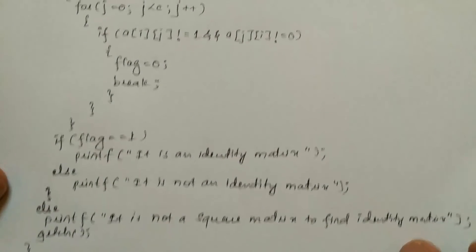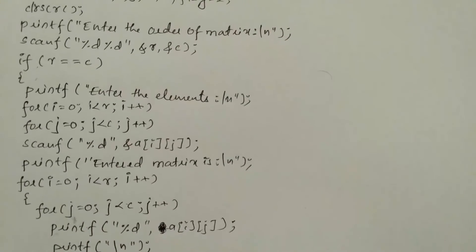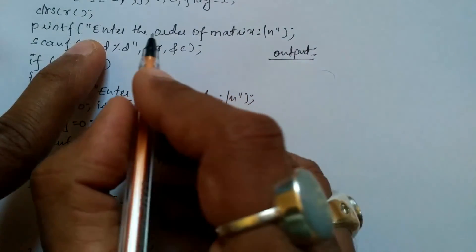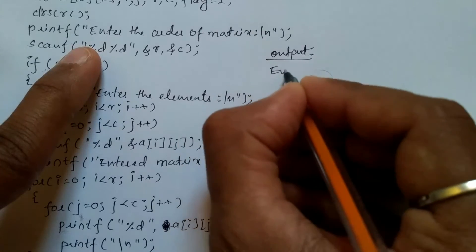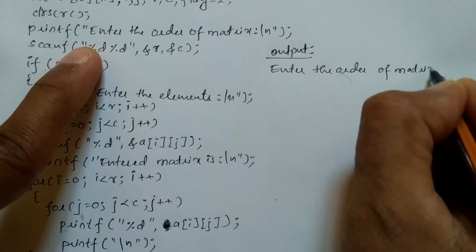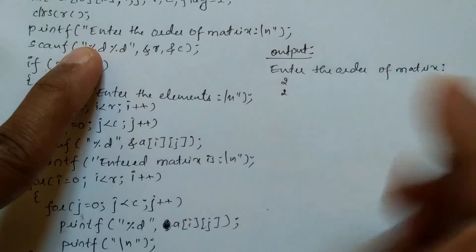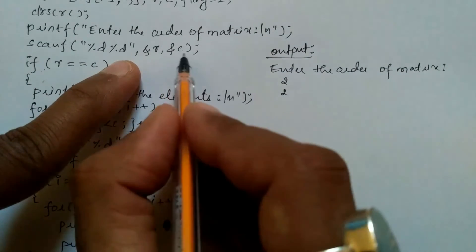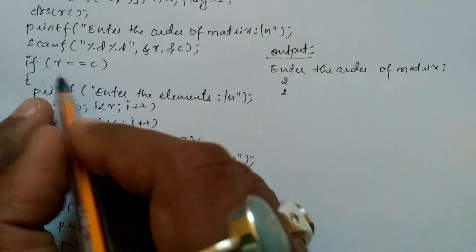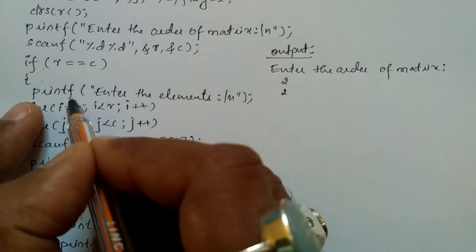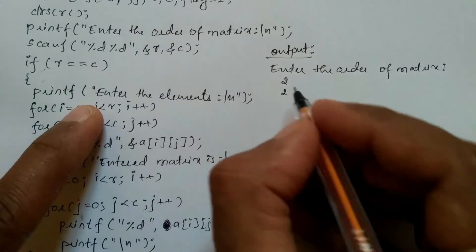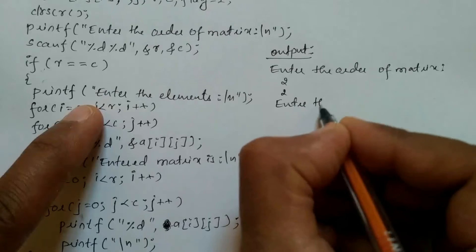Now let us take an example. So when we compile and run the program, it is going to ask the user to enter the order of matrix. The statement 'enter the order of matrix' will be printed. Now I'm going to enter two and two — two means two rows, the next two means two columns. Row is equal to column, that is two is equal to two, condition is true. Once the condition is true, the control enters into the body of the if statement and it is going to execute all these statements and ask the user to enter the elements.